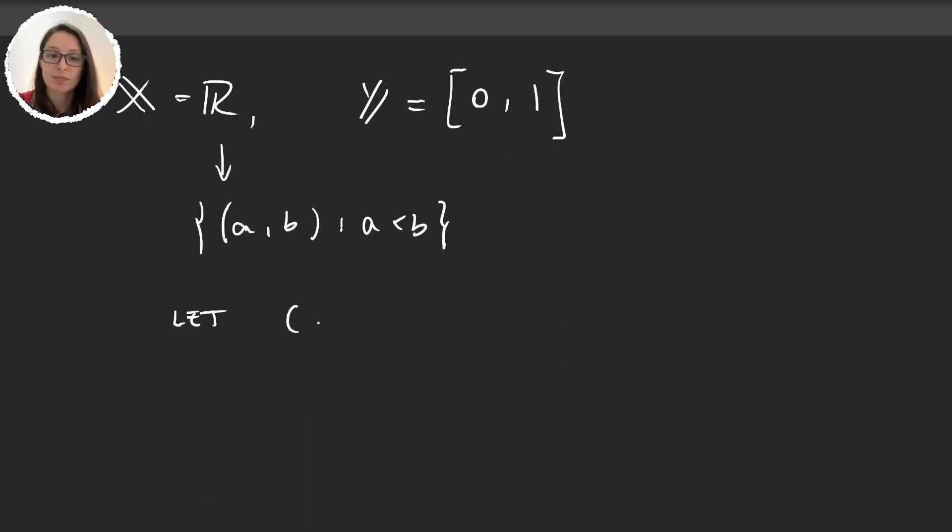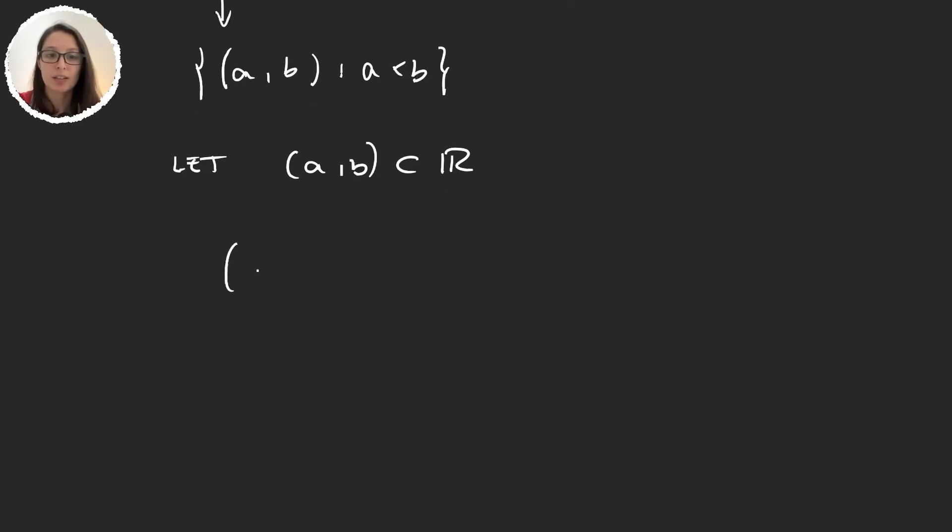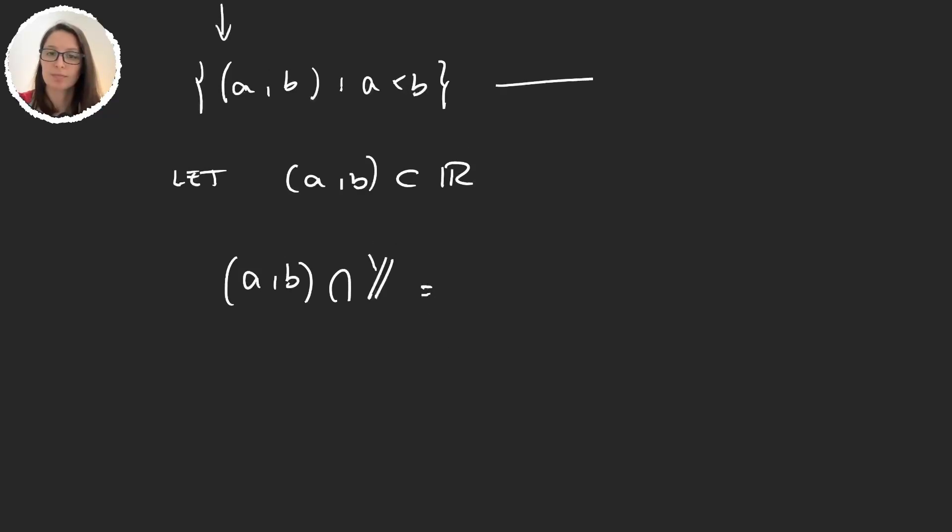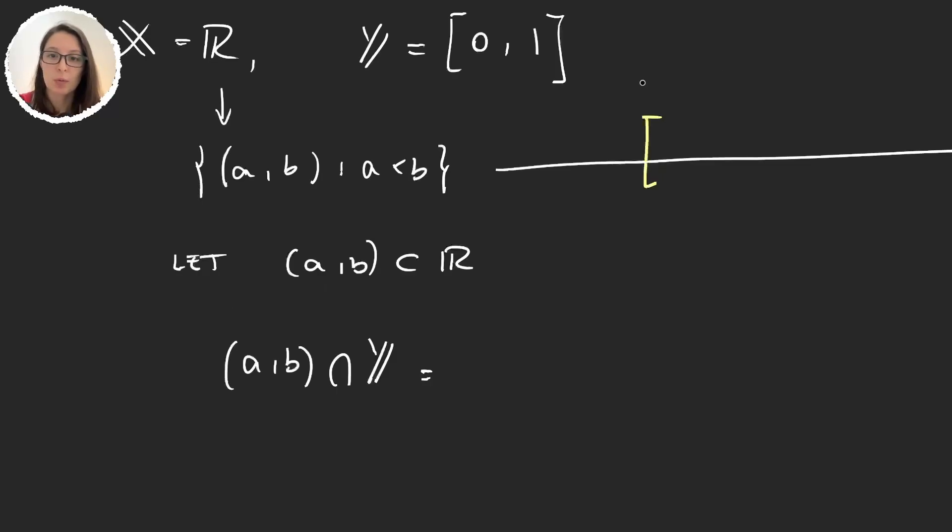So, take an open interval (a,b) and we will consider (a,b) intersection Y. To see what this is, let's make a drawing. Y is the [0,1] and (a,b) is just any interval in the real line. So, one thing that could happen is that (a,b) could be an interval here. In this case, (a,b) intersection [0,1] is (a,b). So, this intersection is giving me the same element. We're obviously going to have different cases. The first one then is (a,b). And this will happen if a and b are between 0 and 1.